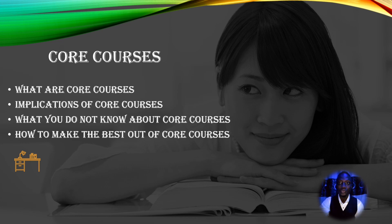Core courses are not usually started at the 100 level — you begin to major in your core courses as you progress in your program. But that doesn't mean you have no core courses at the lower levels. Core courses are denoted with the sign 'C' on your registration portal.